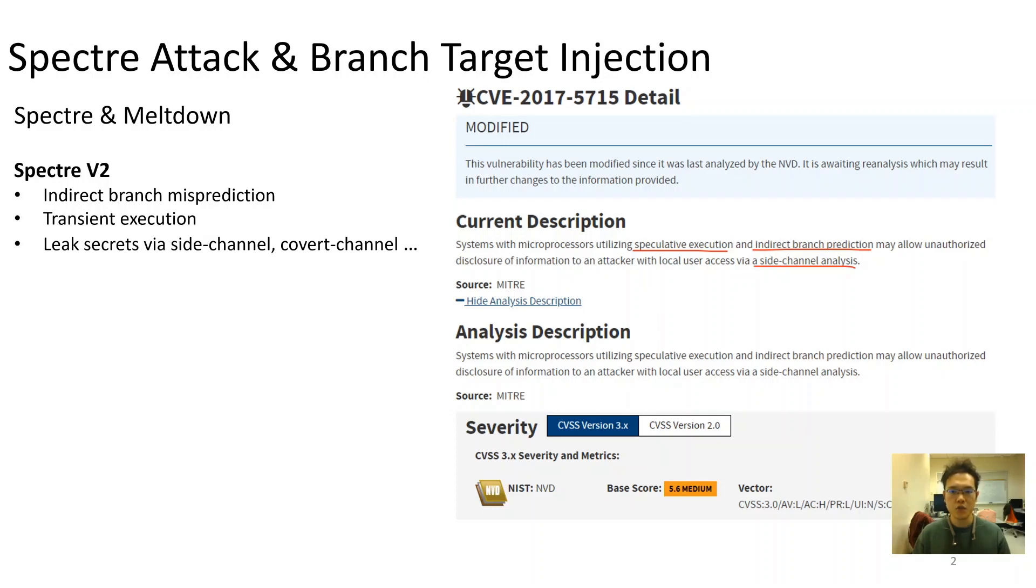Spectre-like attacks are hard to address since they are seeded in the fundamentals of CPU branch predictors. In particular, Spectre 1 and 2 leverage indirect branch mispredictions to activate malicious transient execution, allowing violating microarchitecture states.